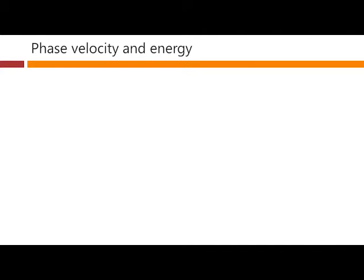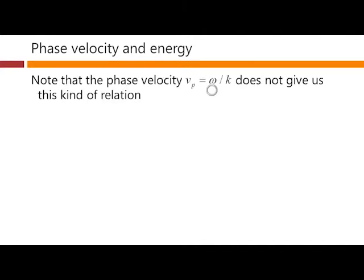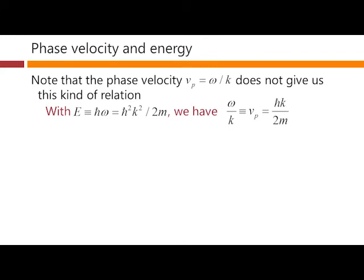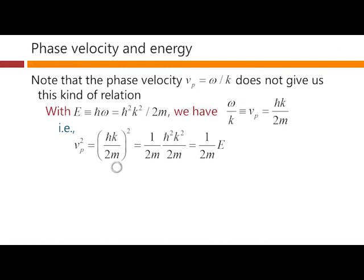If we look at the phase velocity, however, the phase velocity is simply the ratio ω/k. It does not give us that half mv² kind of relation. If we look at it, with energy equivalent to ℏω as before, and that's ℏ²k²/2m for our free electron, then ω/k, which is our phase velocity, is ℏk/2m. And if we square that up, this all becomes 1/2m ℏ²k²/2m. 1/2m times E is what we get as the result. And that would give us the energy would be twice the mass times the square of the phase velocity. It's not a half mv² if we take v as being the phase velocity.